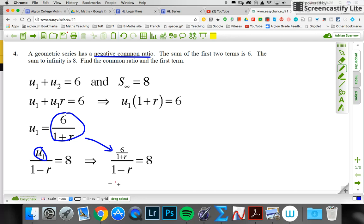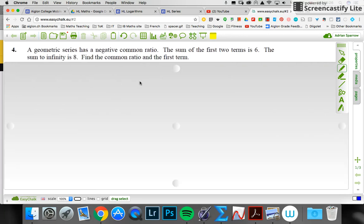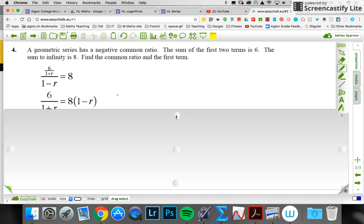Now if I look at the next screen, I'm going to have that as my equation and rearrange it by multiplying both sides by one minus r from the bottom, and then multiplying both sides by one plus r.